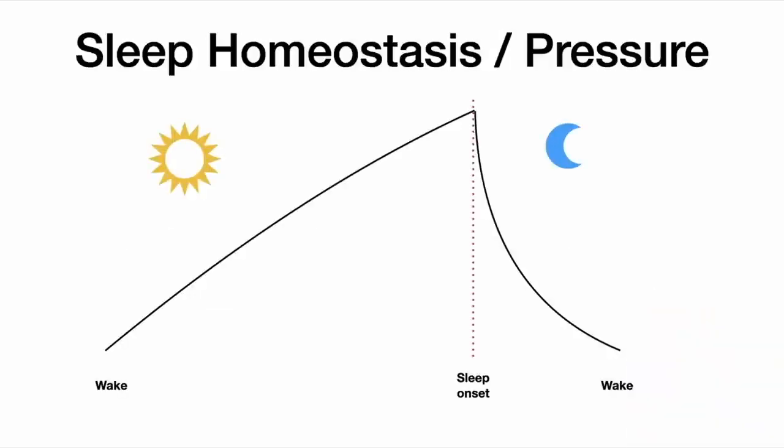One way we can tell that sleep is homeostatically regulated is that the longer we're awake, the more irresistible sleep becomes. This pressure builds up essentially linearly the longer we're awake, and then it falls off when you go to sleep — but it falls off faster than linearly, and we'll talk about why. To understand that, we need to talk about some of the measurable characteristics of sleep.